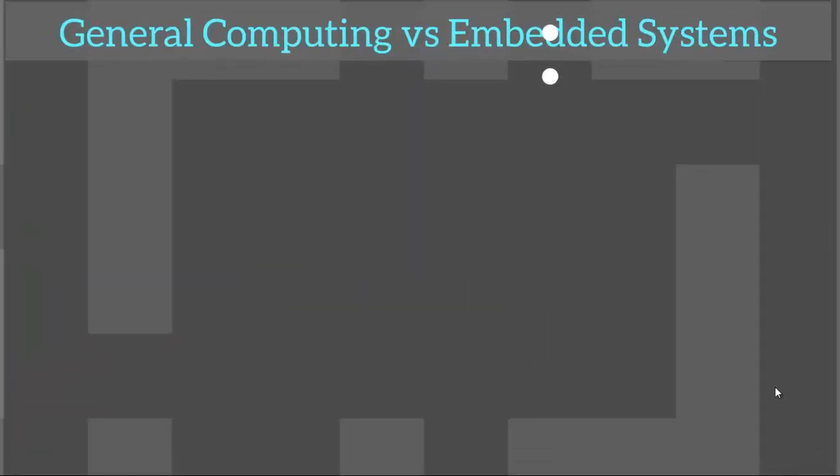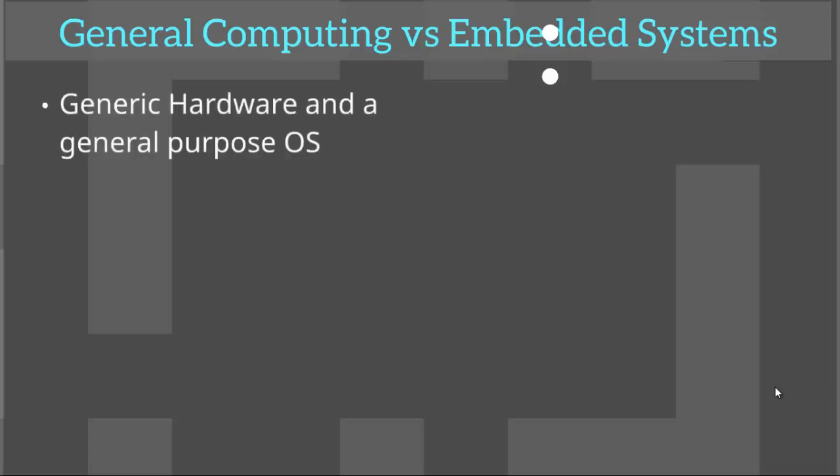Now let us compare between two families: general computing systems versus embedded systems. A general computing system has generic hardware and a general purpose OS. Consider a personal computer — generic hardware like keyboards, mouse, a cabinet, monitor, speaker systems, etc. — and a general purpose OS like Windows, which can handle a variety of tasks.